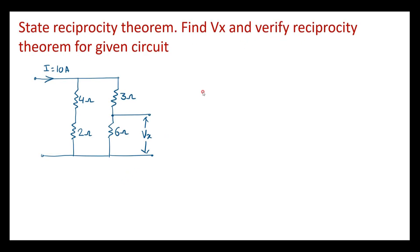In one of my videos, I have already explained the statement of reciprocity theorem — please go through that video. This is the given circuit. Let me consider this as terminal A, this as terminal B, this as terminal C, and this as terminal D. First we will try to find voltage Vx, which is nothing but the voltage across the 6 ohm resistor.